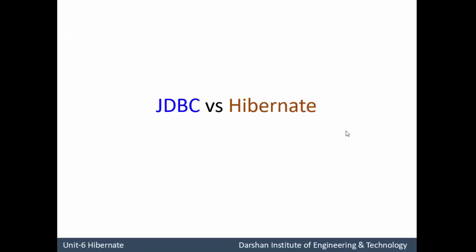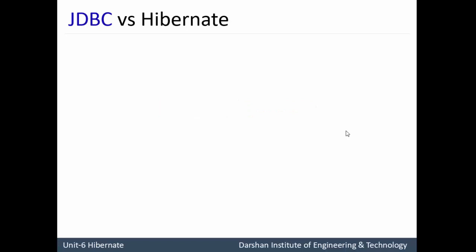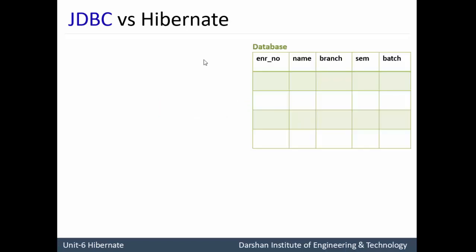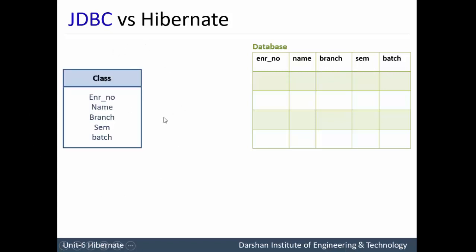Now the most important part is a comparison between JDBC and Hibernate. To explain with one example: this example explains the working of JDBC, that is Java Database Connectivity. The slide represents a database with five columns: enrollment number, name, branch, semester, and batch. When working with a Java class, whatever column names are there in our RDBMS are represented as objects of some class — so enrollment number, name, branch, semester, and batch are all objects.